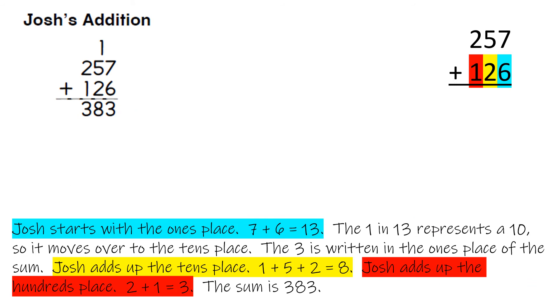And then here's Josh's addition. Josh starts with the ones place, 7 plus 6 equals 13. The 1 of the 13 represents a 10, so it moves over to the tens place. The 3 is written in the ones place of the sum.